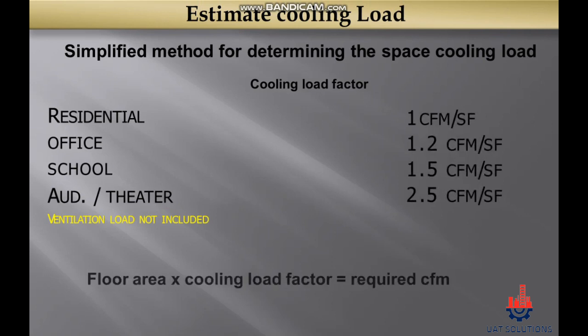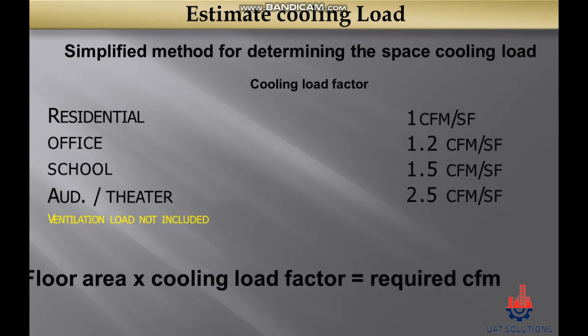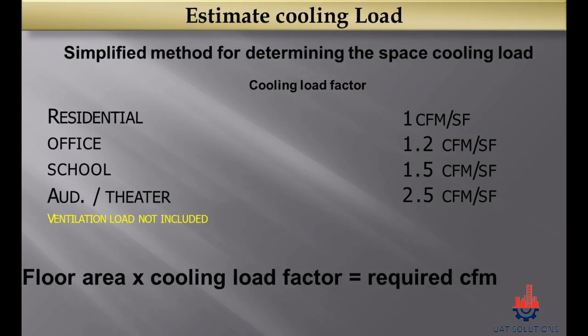The simplified method for determining the space cooling load is using the cooling load factors as shown. Residential buildings require 1 CFM per square foot. Office buildings require 1.2 CFM per square foot. School buildings require 1.5 CFM per square foot. Theater buildings require 2.5 CFM per square foot. The following formula can be used: floor area in square feet multiplied by the cooling load factor equals space cooling load.